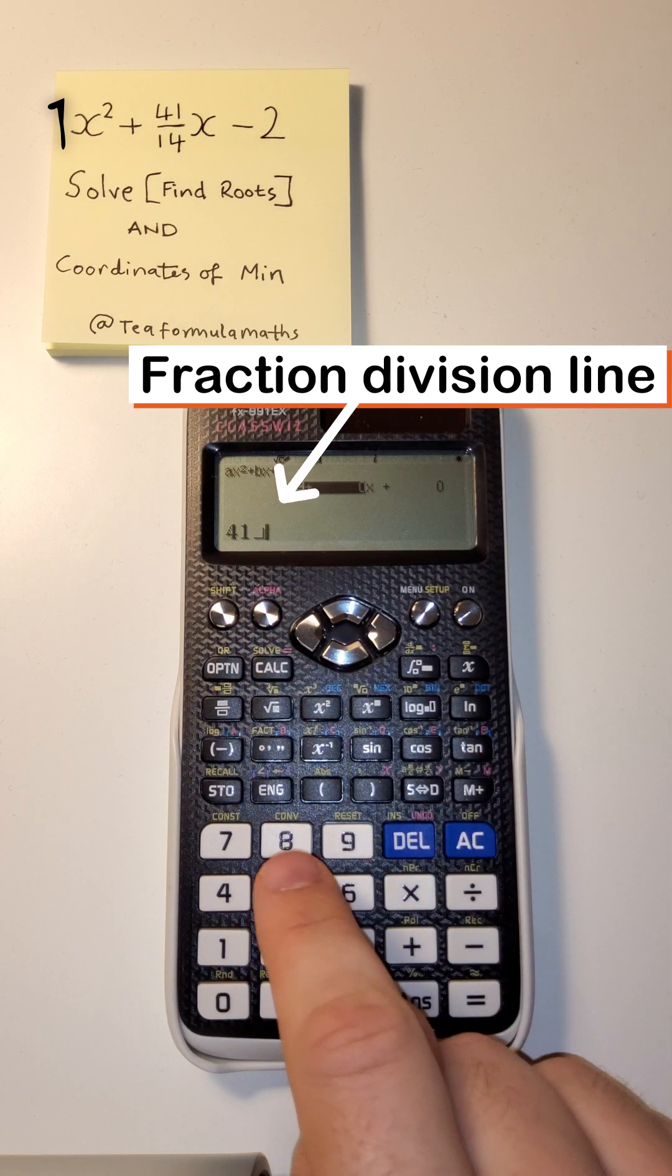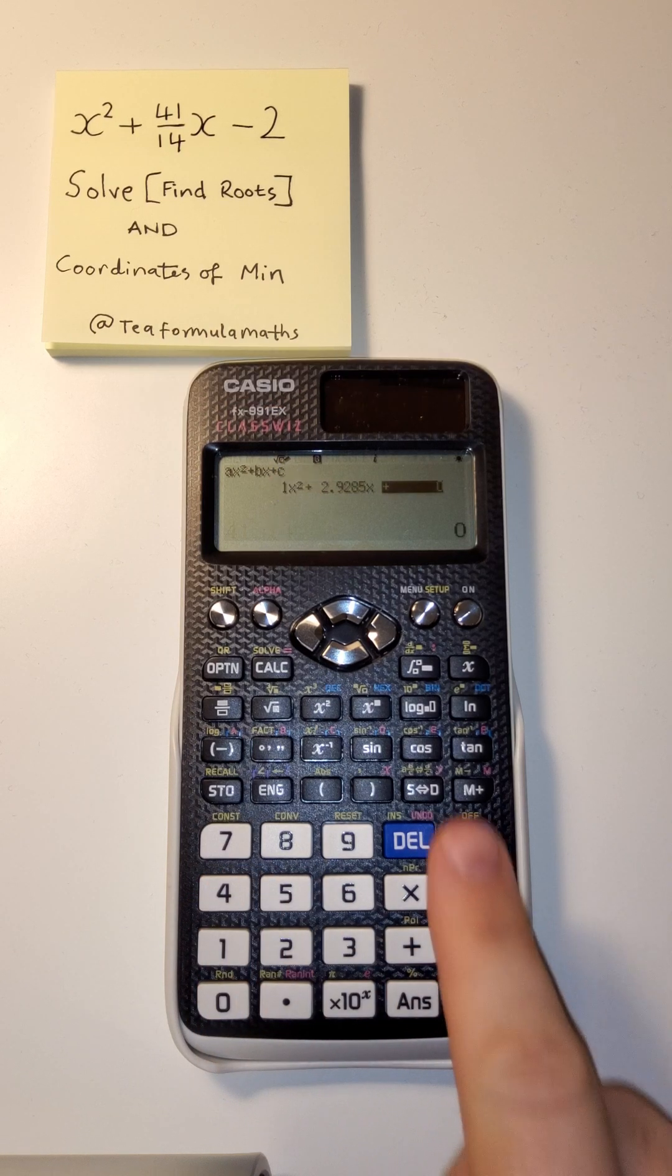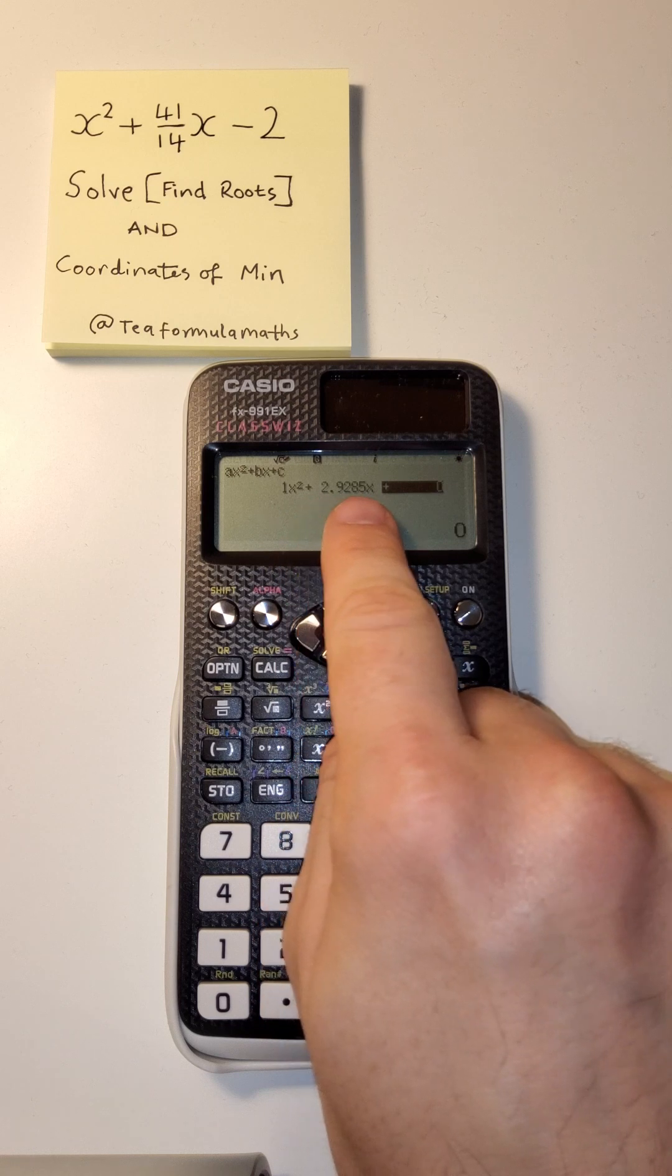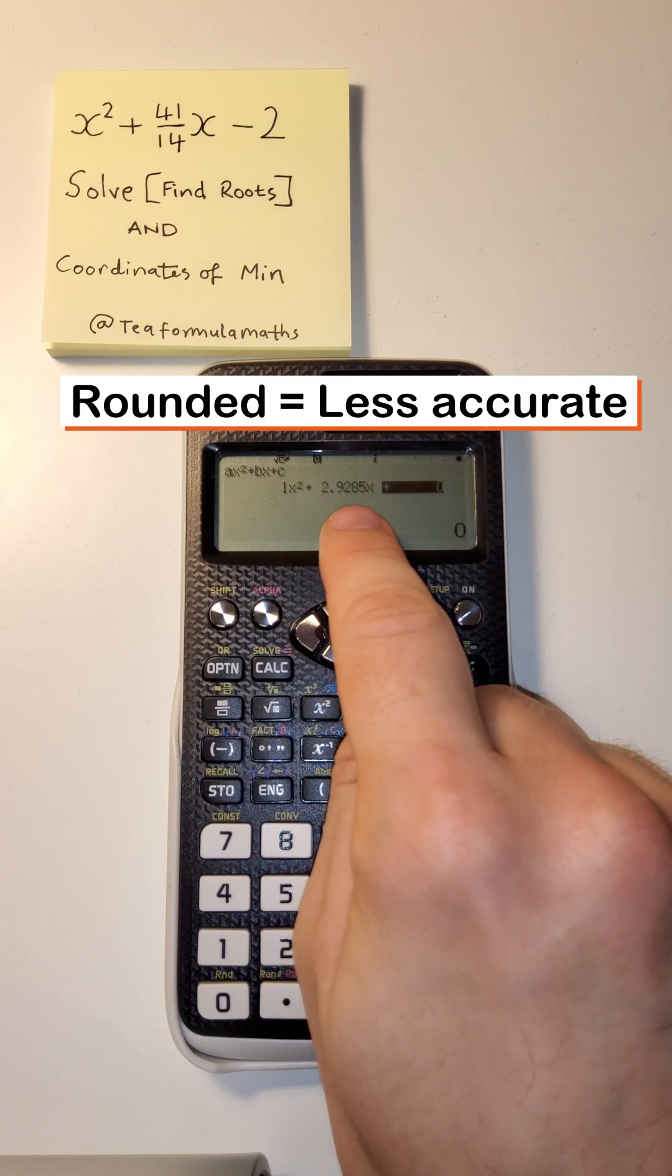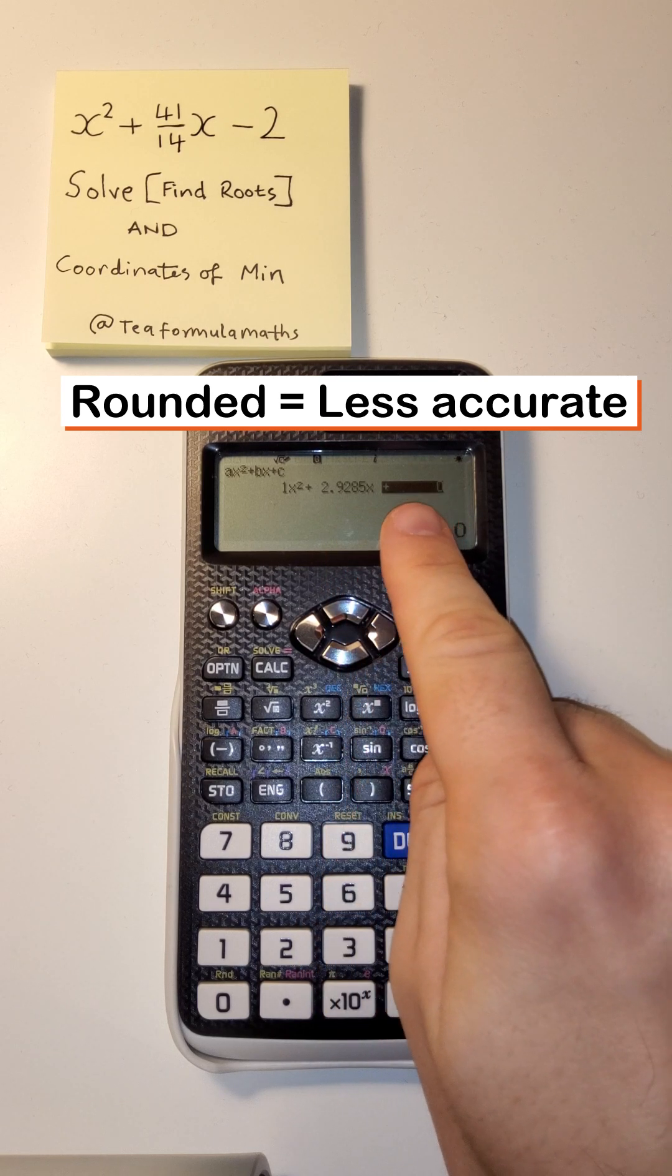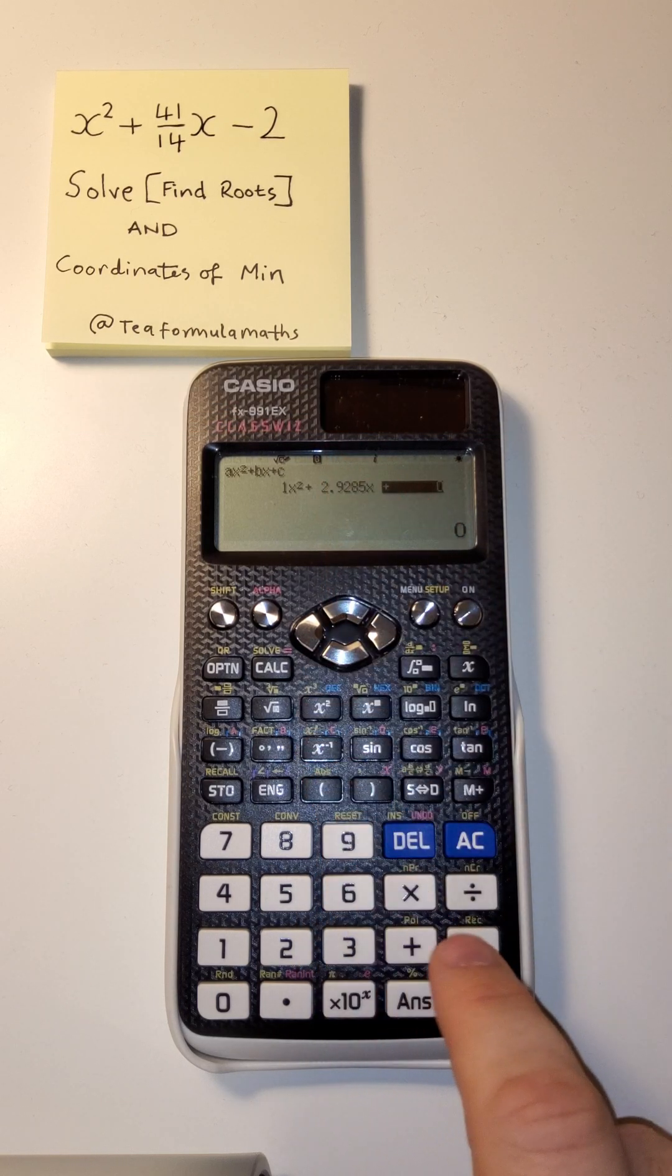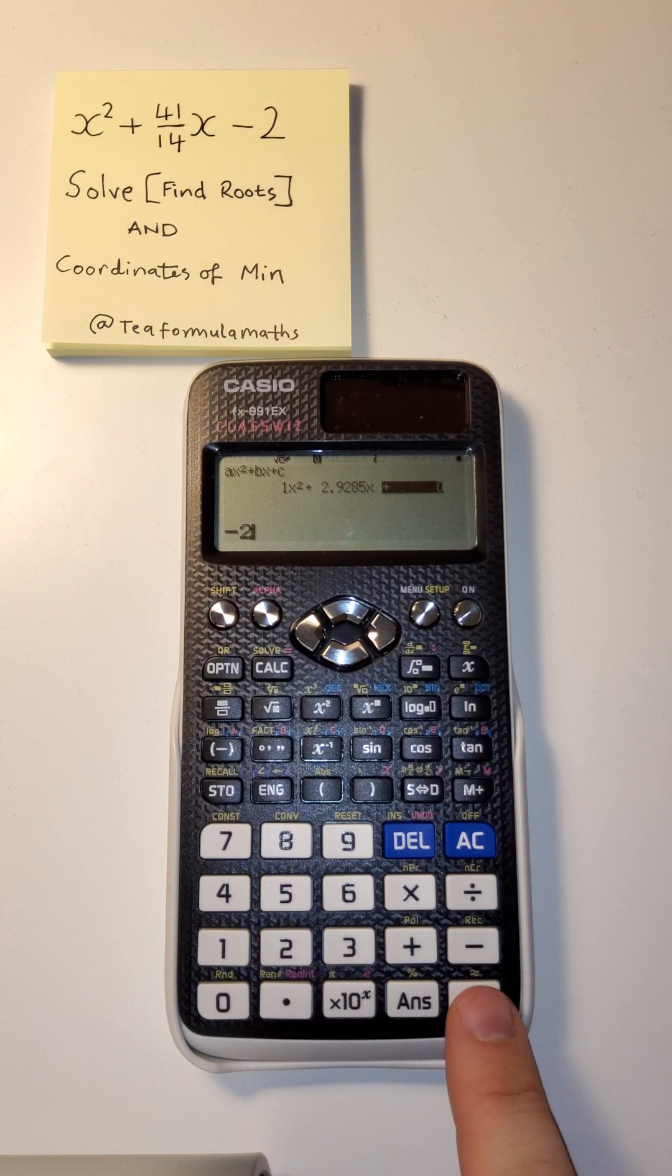Whatever comes next is the denominator. We have 14, so we put that in, equals. And look what it does—turns it straight into a decimal. What does that mean? It's rounded slightly. Interesting result, but I think we'll get nice whole fractions from this anyway. Finally, we put in our negative two, just using the negative button.